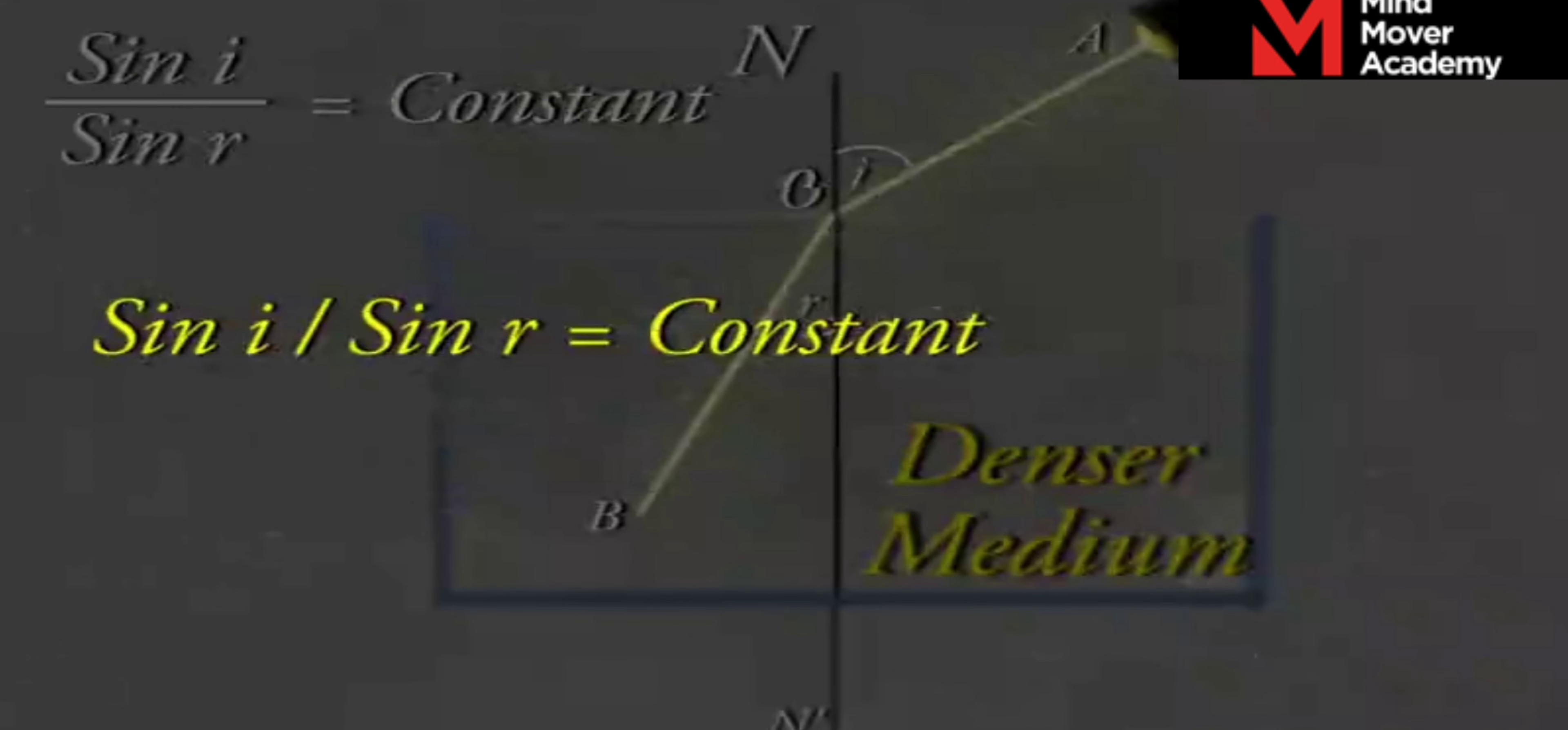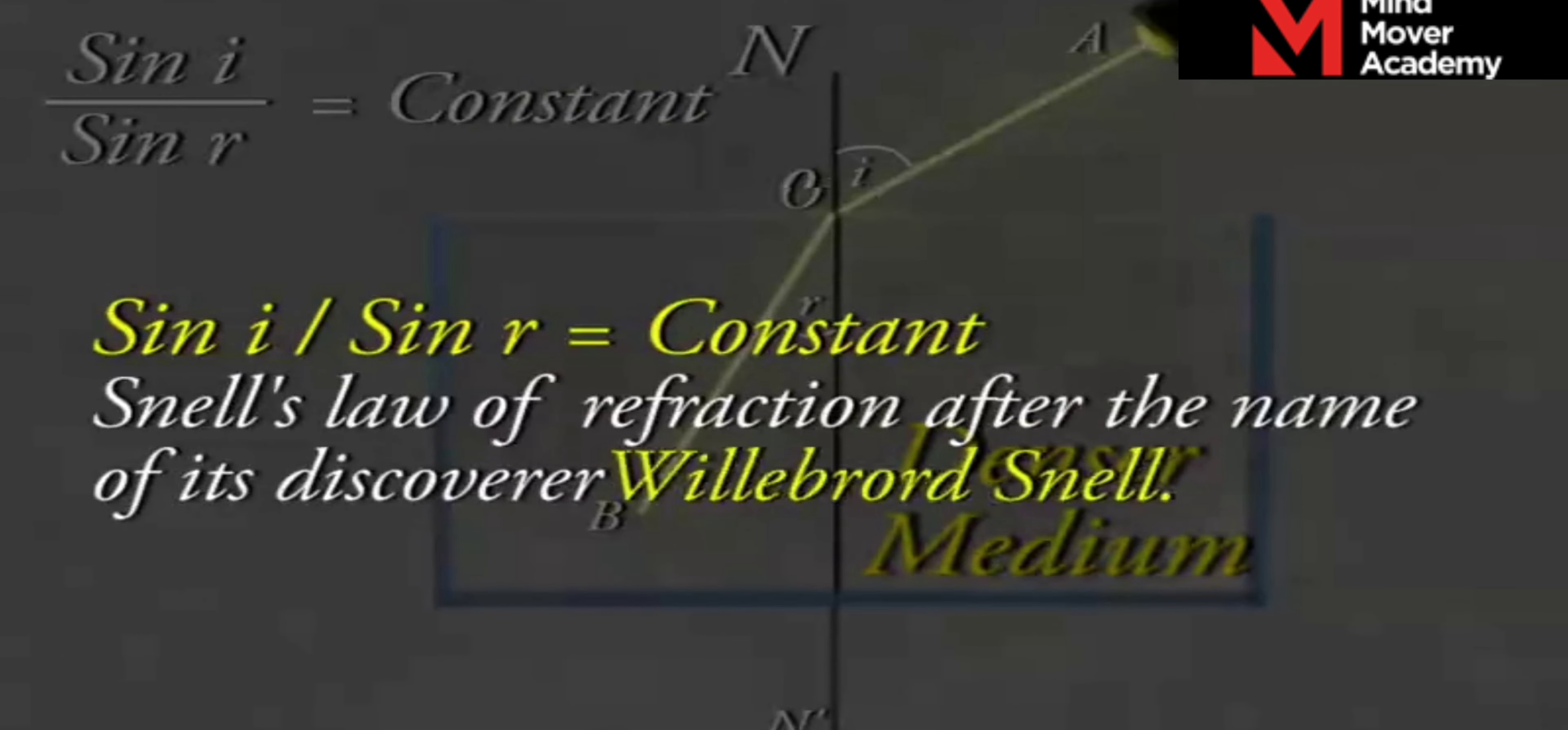The incident ray, the refracted ray, and the normal at the point of incidence all lie in the same plane. In fact, the ratio of sine of the angle of incidence to the sine of the angle of refraction is a constant for the light of a given color and for the given pair of media. This law is also known as Snell's law of refraction after the name of its discoverer, Willebrord Snell.